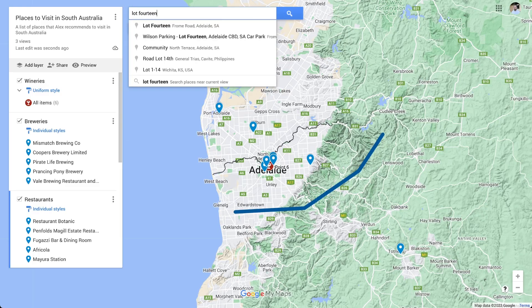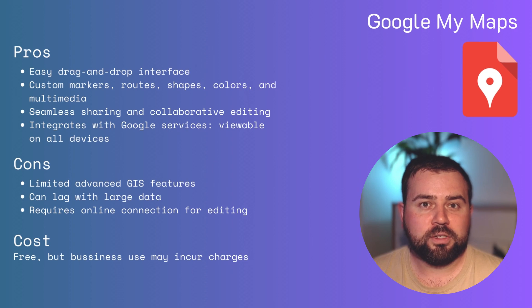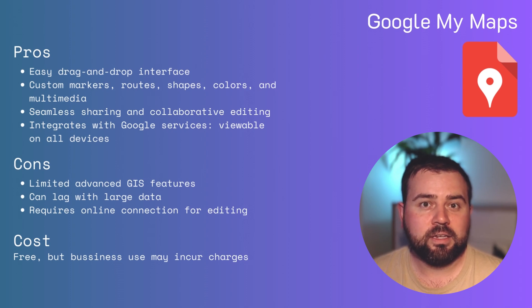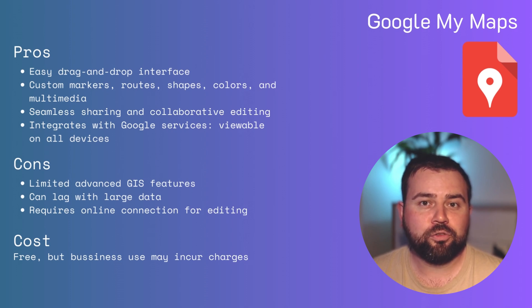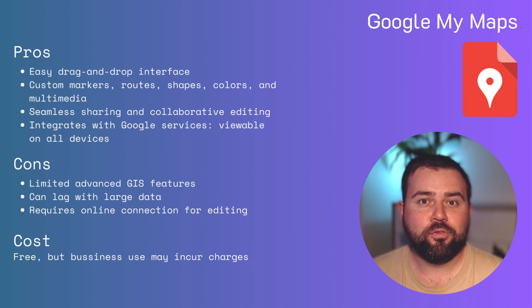Creating maps for educational use, such as marking historical sites, or creating a map of the world's different biomes. You can also create maps for business use, such as mapping out a sales territory, or tracking customer locations. The pros for Google My Maps include its simple drag-and-drop interface, making map creation a breeze. The ability to add custom markers, routes, shapes, colours, and even photos or videos. Its seamless sharing options, allowing for collaborative editing or public and private viewing. And that it integrates well with other Google services, and can be viewed on any device with Google Maps. Its cons are its limited advanced GIS functionalities, compared to professional mapping tools. And that Google My Maps can sometimes lag when loaded with a significant amount of data. While offline editing isn't available, requiring an internet connection for map creation and editing.